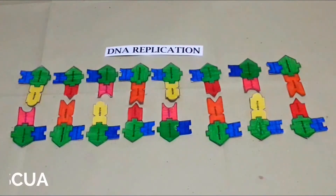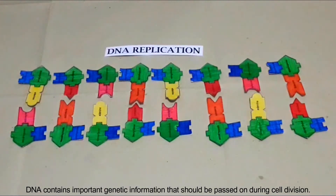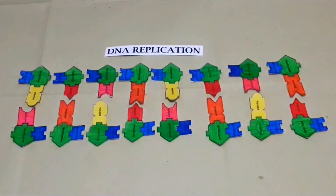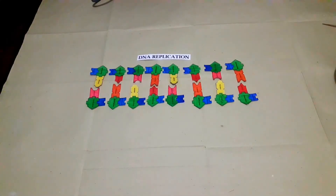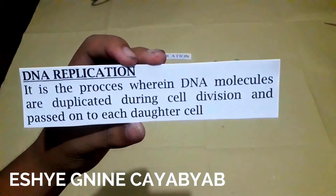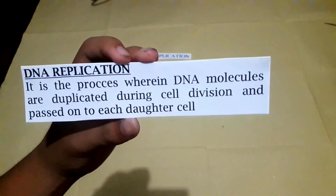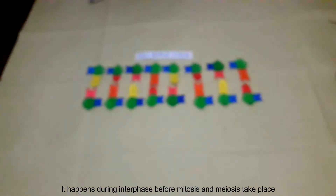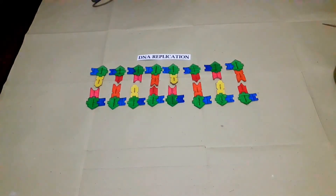DNA contains important genetic information that should be passed on during cell division. Cells must have a mechanism by which a copy of DNA is produced that is identical to the original DNA. This is done through replication. Replication is the process wherein DNA molecules are duplicated during cell division and passed on to each daughter cell. It happens during interphase, before mitosis or meiosis takes place.